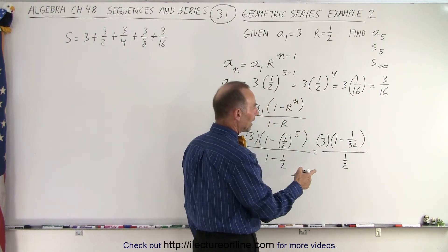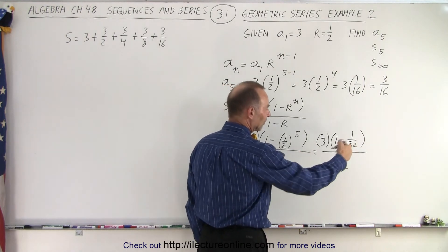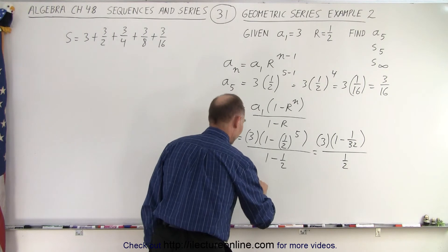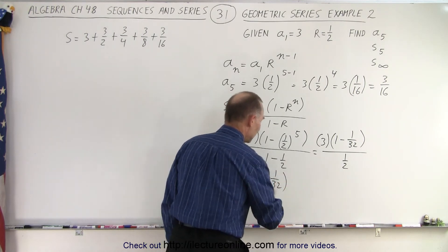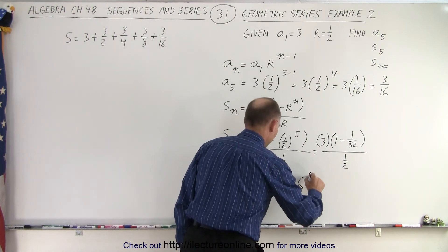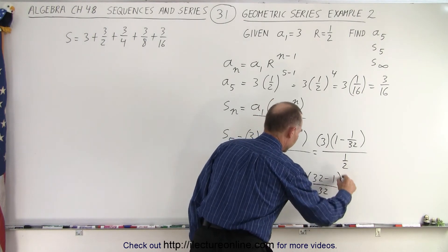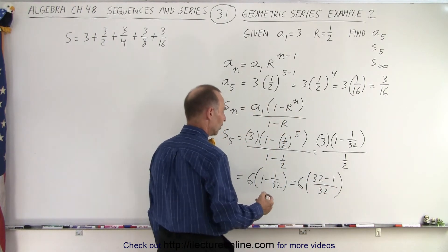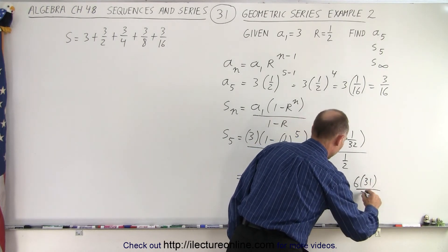3 divided by 1 half, well that would be 6, right? Because you multiply by the inverse. So this would be equal to 6 times 1 minus 1 over 32. So now we need to find the common denominator. So this is equal to 6 times 32 minus 1 over 32, like this.